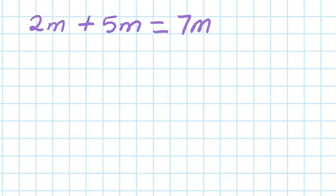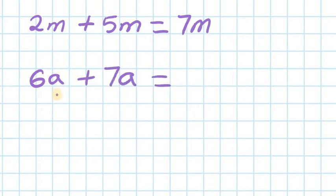Next one: 6a plus 7a. Same thing — just like 7 apples, add another 6 apples. So you just go 7 plus 6 is 13, so your answer is 13a. Very simple.